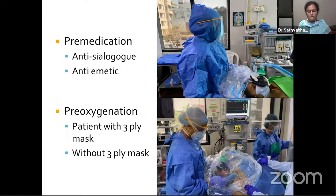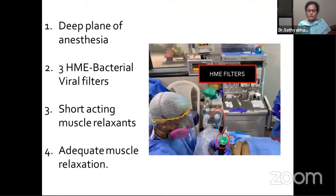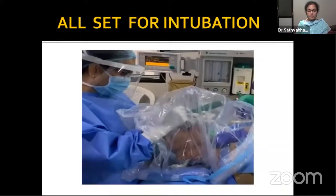Create a COVID-19 tracheal intubation trolley or pack; involve the smallest number of staff necessary; avoid aerosol-generating procedures wherever possible; use the most appropriate airway manager; use a cognitive aid if difficulty arises; and use clear language and closed-loop communication. Pre-medication with an antisialogogue is given to reduce aerosol generation; an anti-emetic pre-medication can be given since vomiting can also generate aerosol. We use propofol for induction and maintenance, which obviates the need for anti-emetic pre-medication.